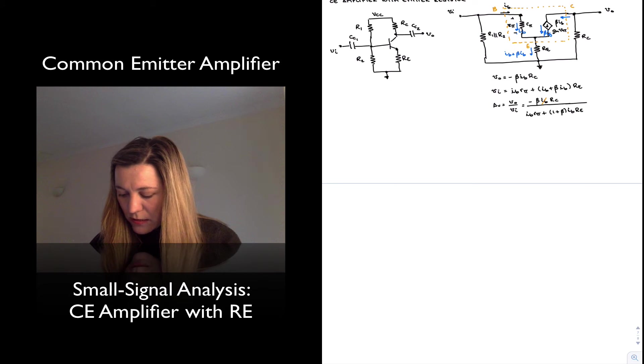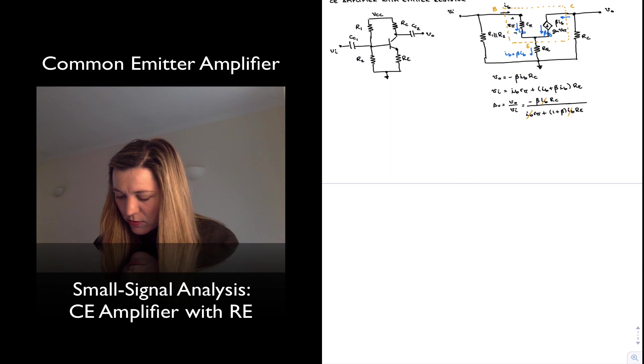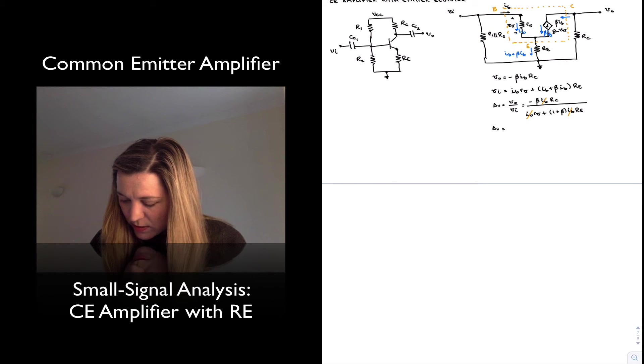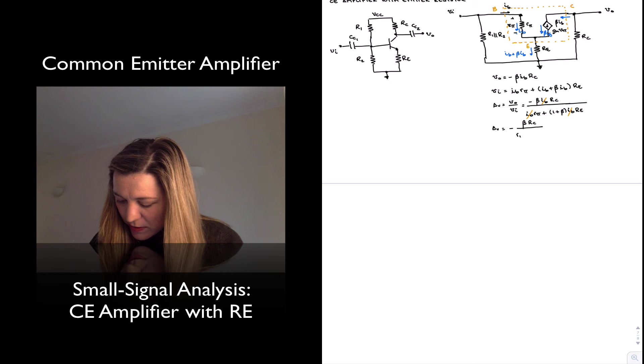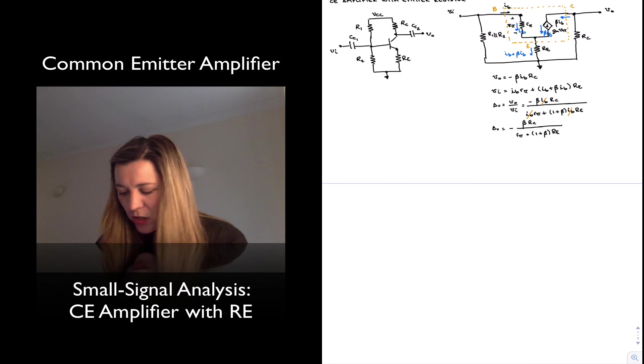Since I_B is multiplying every term in numerator and denominator, I can factor it out or eliminate it, and so I'm left with A_v being equal to negative beta*R_C divided by r_pi plus (1 + beta) times R_E. Now notice that r_pi is beta times little r_e, and so